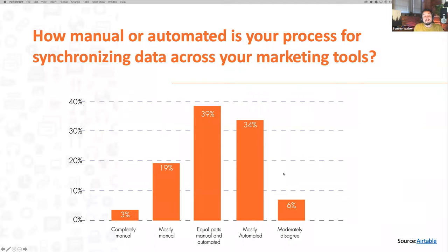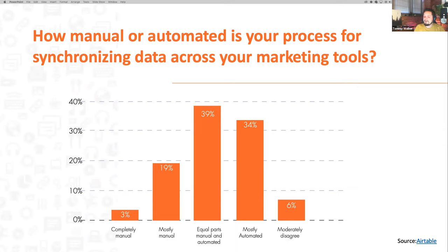When you quantify this, the time it takes to do all of this manual syncing over the course of a week ranges anywhere from eight to 20 hours per week — just doing manual syncing, double entry, stuff like that. I want to work in Airtable, somebody else works in Asana, so I put the same thing in both places. It's a big challenge, especially with Jira boards when working with developers.